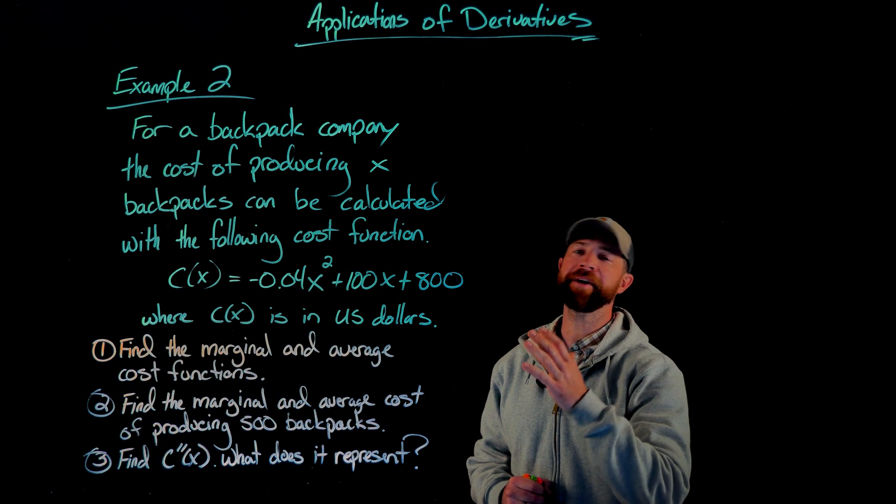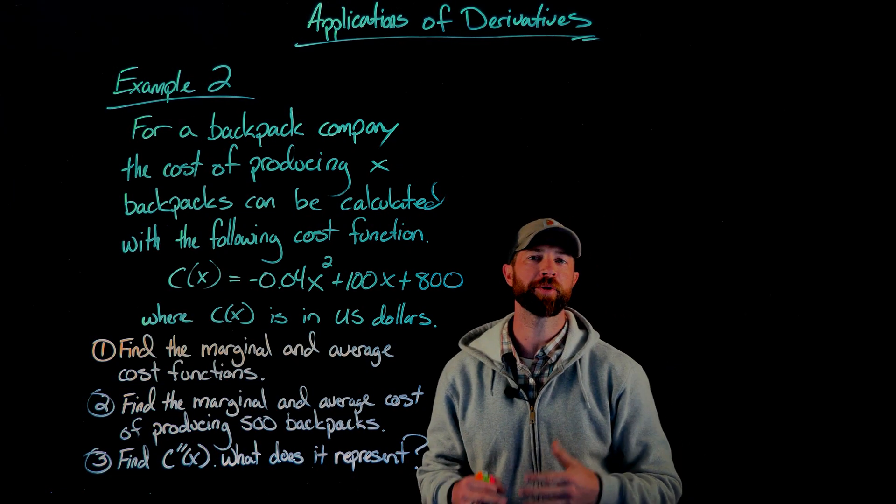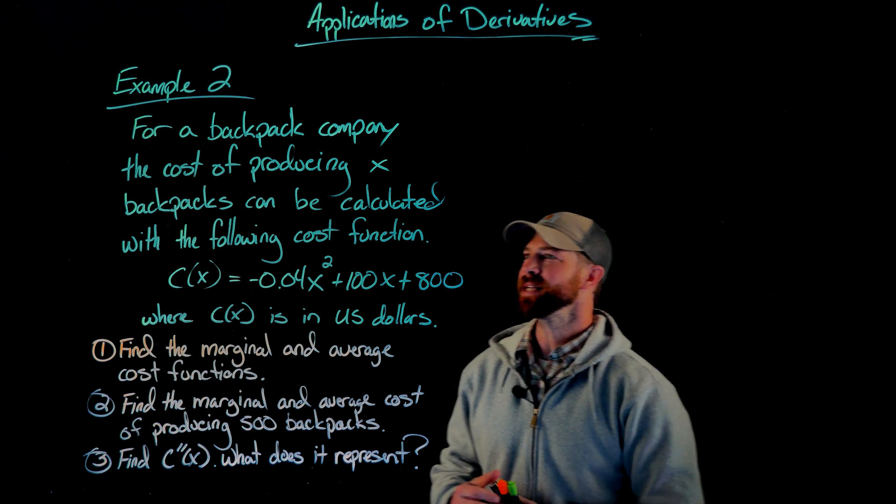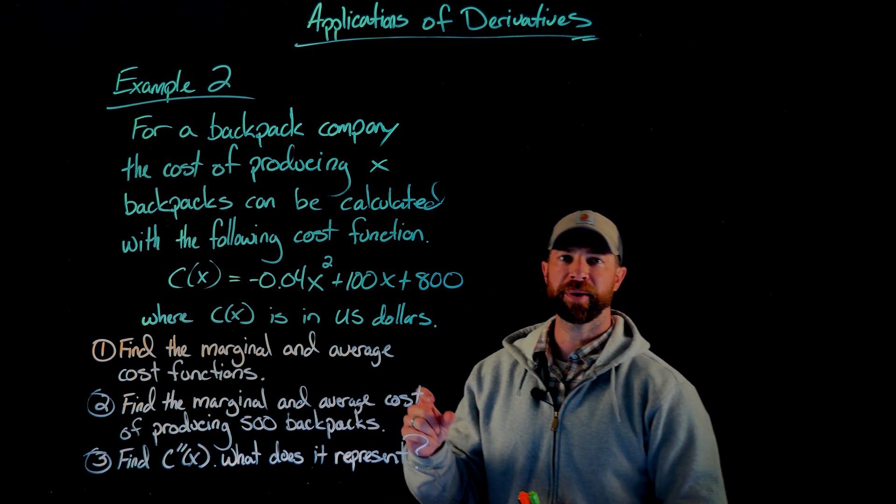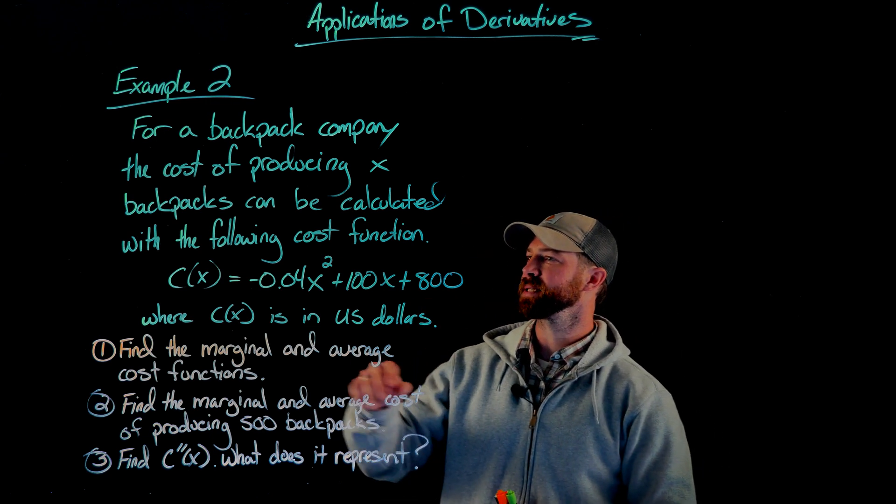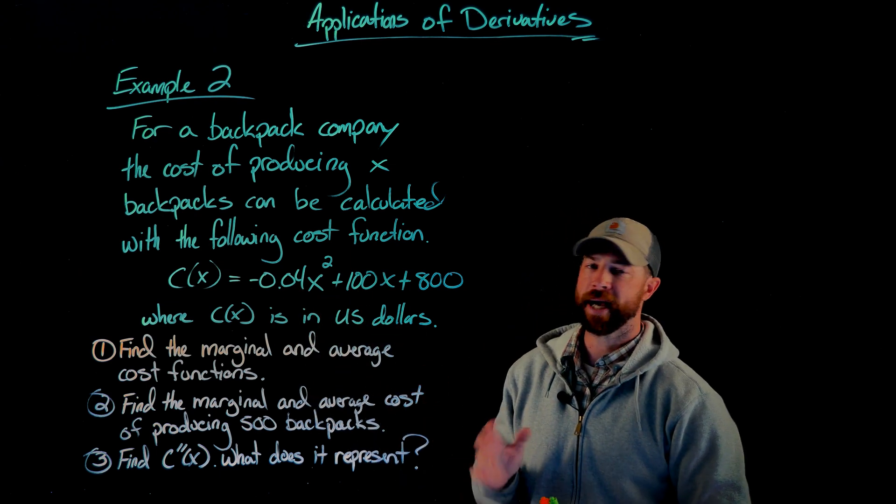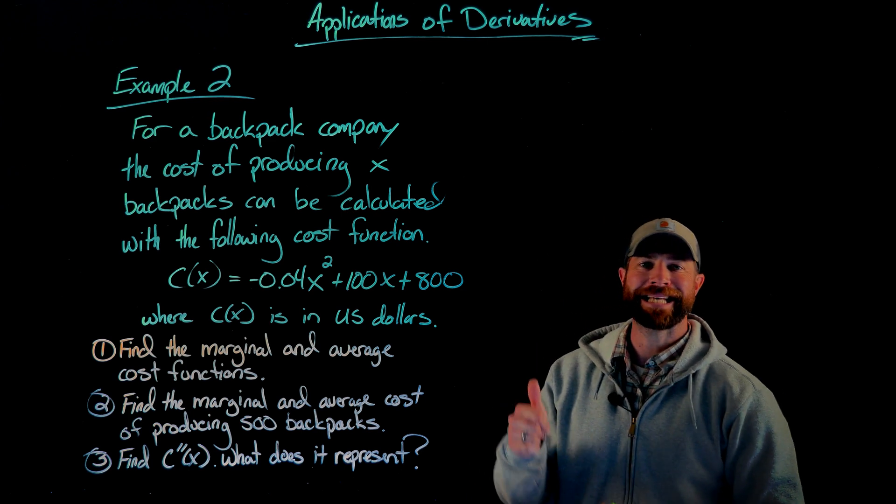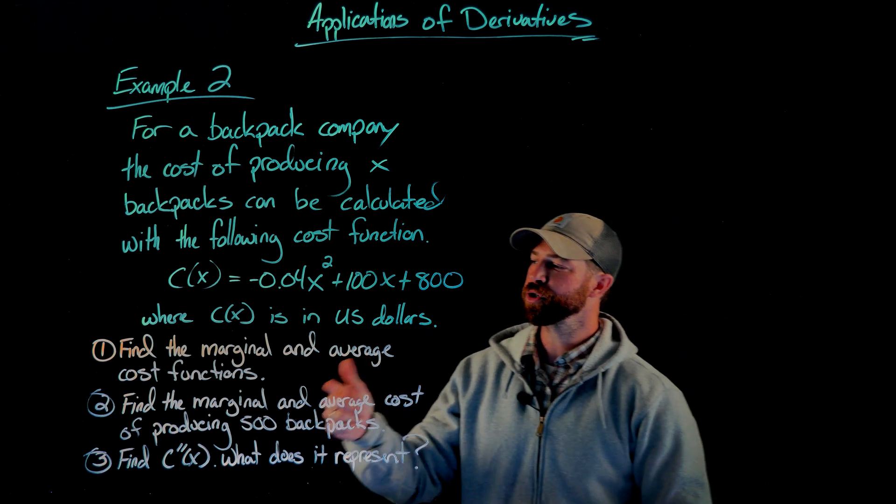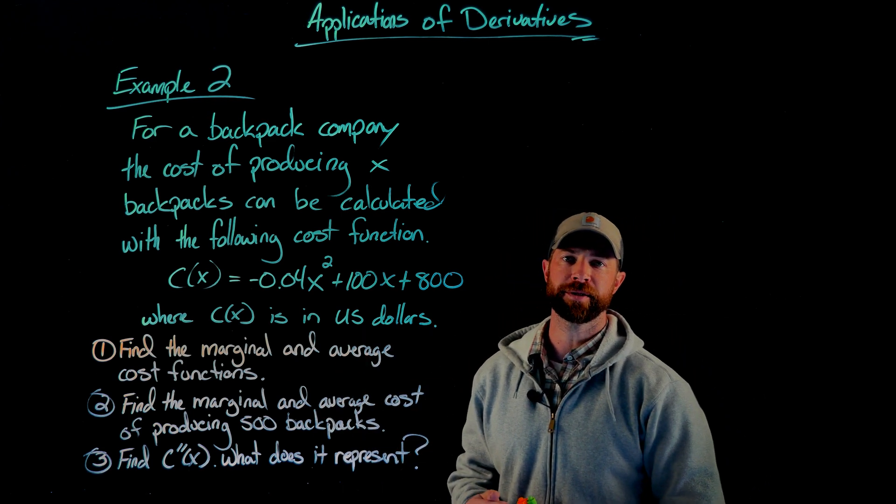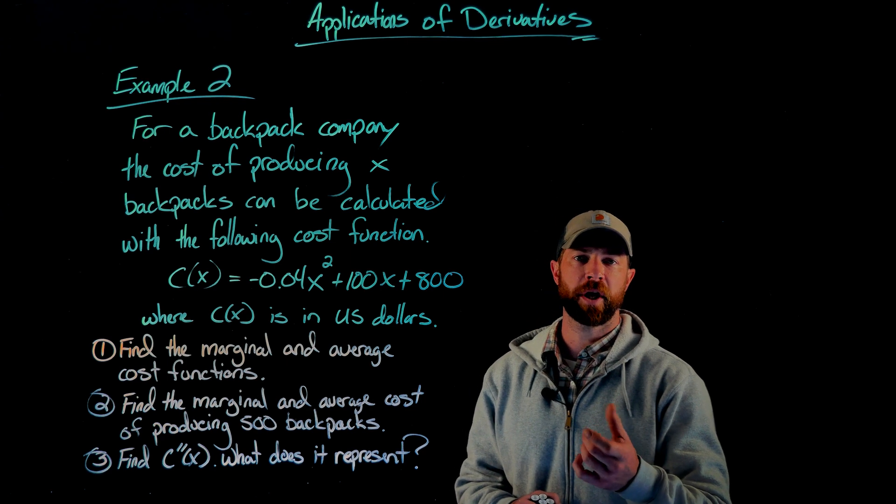In this example, we have a cost function for a company who produces backpacks. The cost in US dollars for producing x backpacks is calculated by C(x) = -0.04x² + 100x + 800. We're being asked to first find the marginal and average cost functions.